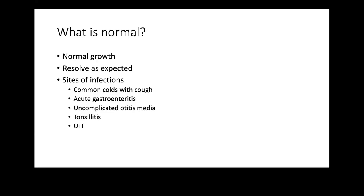UTIs are also very rarely associated with immune deficiency, because most of the time recurrent UTI is due to an anatomical defect or urological obstruction. You don't necessarily have to investigate a child for primary immune deficiency just because the child gets frequent urinary tract infections.